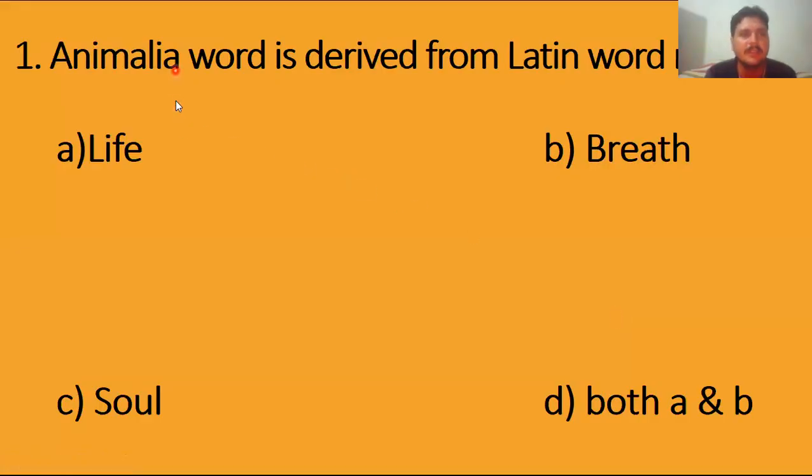What is the first MCQ? The Animalia word is derived from a Latin word and means life, breath, soul, or both A and B. The right answer is both B and C because it means breath and soul, not A and B. So D is the wrong option. The right answer is B and C, breath and soul.